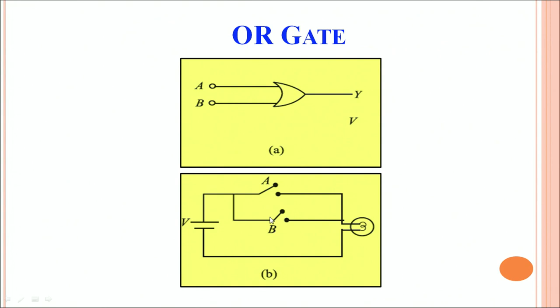If any one of them is closed, either A is closed or B is closed, which means either A goes to 1 or B goes to 1, automatically the current begins to flow in the circuit and the bulb will glow. When both of them are connected in the circuit, again the bulb glows.